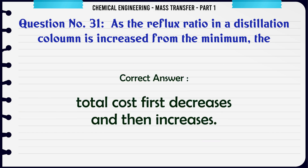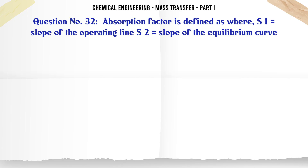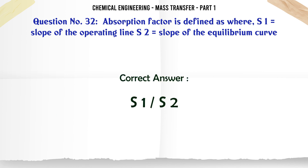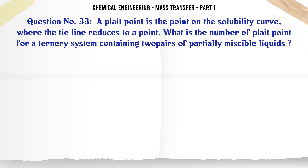Absorption factor is defined as, where S1 is equal to slope of the operating line and S2 is equal to slope of the equilibrium curve: A. S2/S1. B. S1/S2. C. S1 - S2. D. S1 × S2. The correct answer is S1/S2.